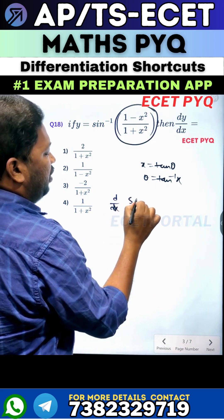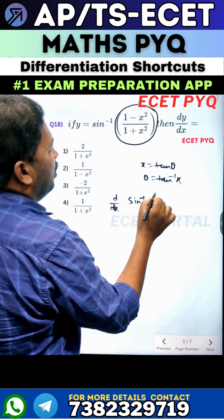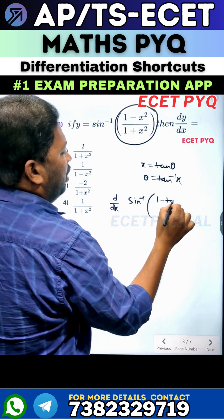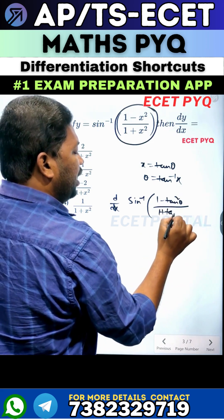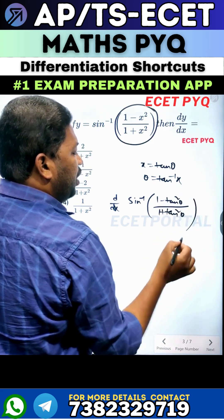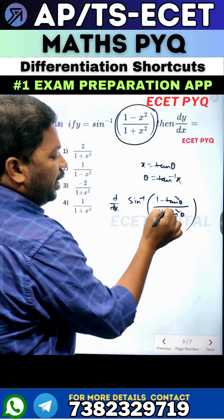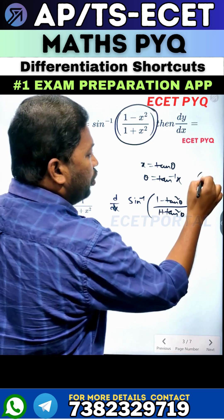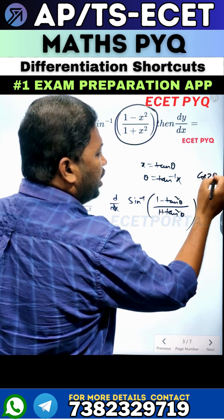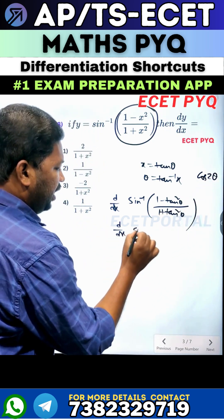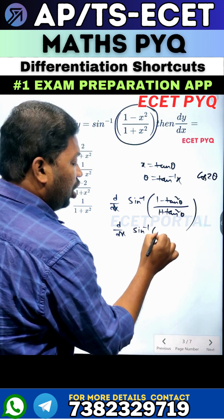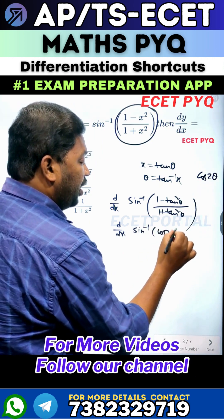We get dy/dx of sin inverse of (1 minus tan square theta) by (1 plus tan square theta). This expression is the cos 2 theta formula — cos 2 theta in terms of tan. So this becomes dy/dx of sin inverse of cos 2 theta.